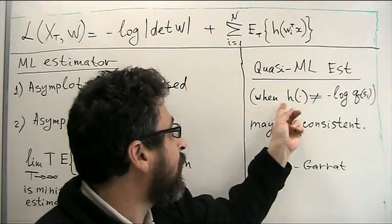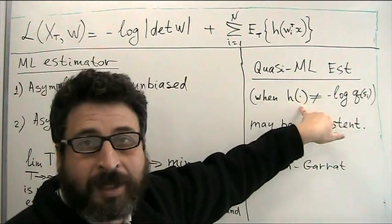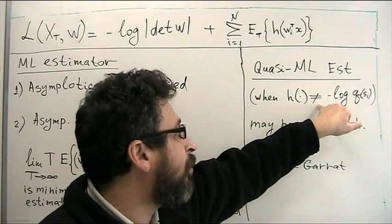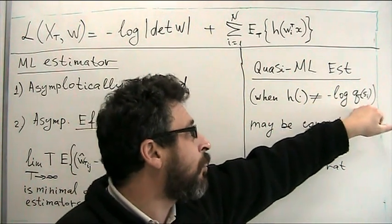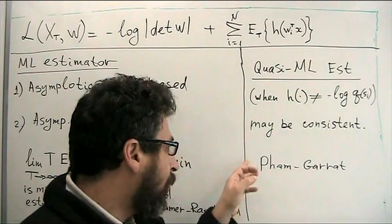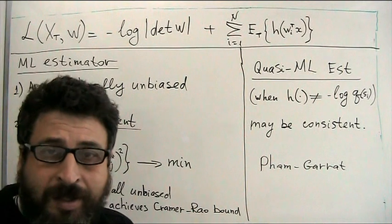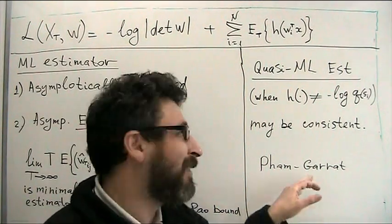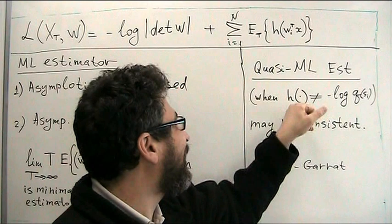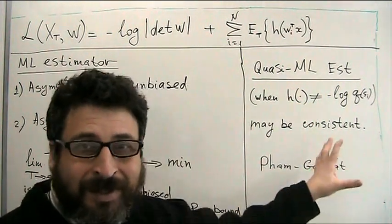So, in this case, again, we don't know actual q. So, we use some nonlinear function h, which is not minus log of q, but some other function. And in their paper, Pham and Garat considered which are requirements on this h to estimator still to stay consistent. And we will dedicate some attention later to this question.